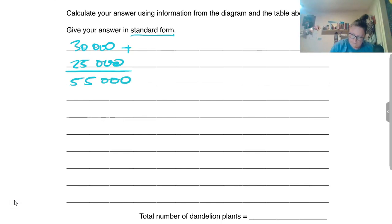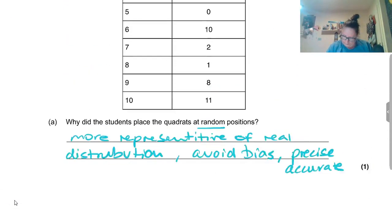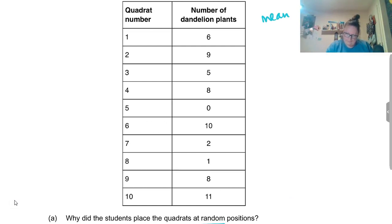If we add those two areas together, I get a total of 55,000. Now if we're working out the number of dandelion plants, we also need to take some information from here. So we do need to calculate an average. If we add all of these numbers together, it equals 60. I just added them on the calculator. And divide that by 10 means that there will be six dandelion plants per quadrat.